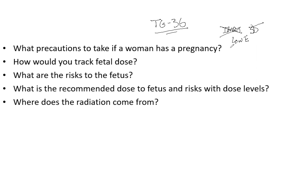Consider special shielding — sometimes called a bridge — placed over the patient's abdomen to shield the fetus. This needs to be four to five HVLs thick and is placed over the belly to help reduce dose. Avoid excessive imaging as well. These are the precautions outlined in TG-36.